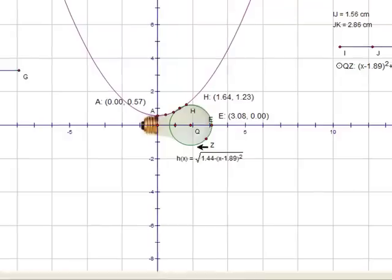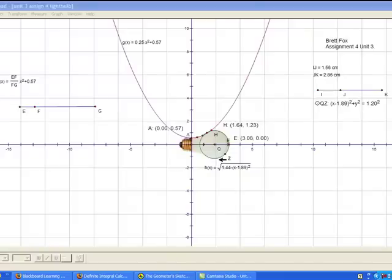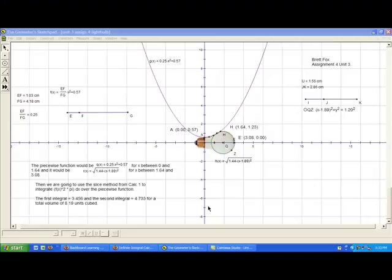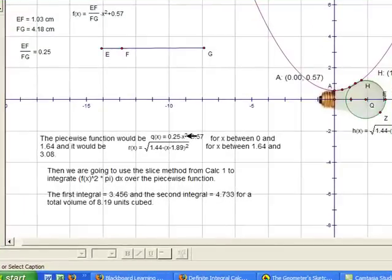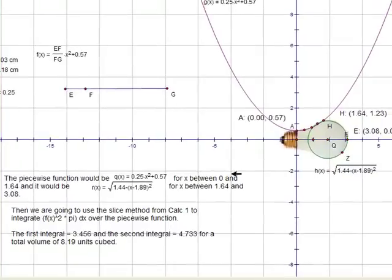Now we can use a piecewise function, as we learned in calculus 1, to split it up and find the total volume. So the piecewise function would be 0.25x squared plus 0.57 for x between 0 and 1.64. Because for that part of it, it goes from 0 to where they intersect at 1.64. And it would be the second equation for x between 1.64 and 3.08.